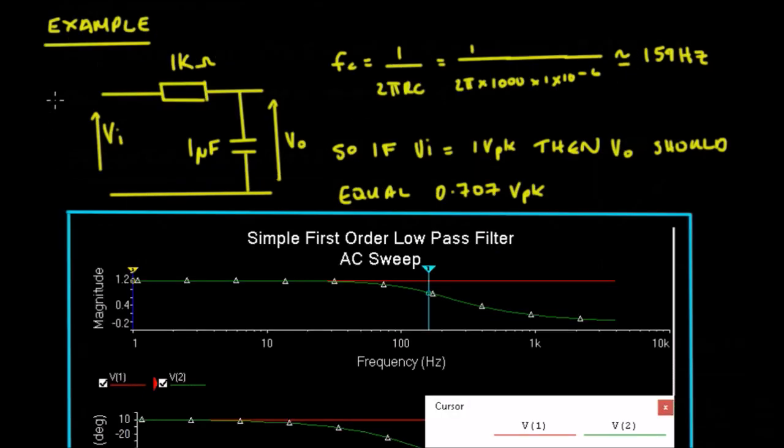So we have an example of this and it's built up in multisim. But a simple example, we've got a 1 kilo ohm resistor and a 1 micro farad capacitor. And that's the input voltage, that's the output voltage. So this is a little low pass filter. So we're saying that F C, the cutoff frequency is 1 upon 2 pi R C. So it's going to be 1 upon 2 pi times a thousand times 1 times 10 to the minus 6. So it's approximately equal to 159 hertz.